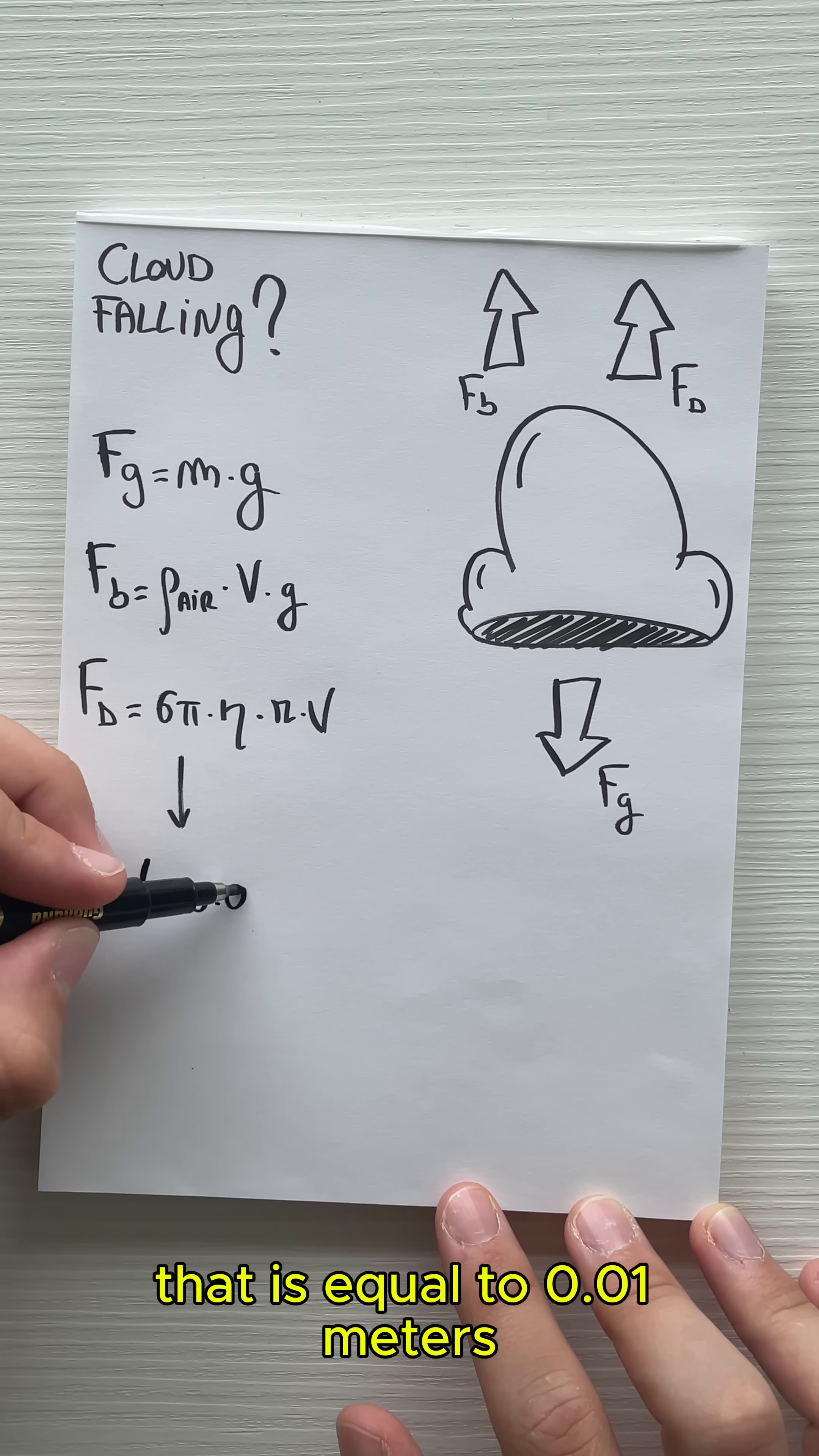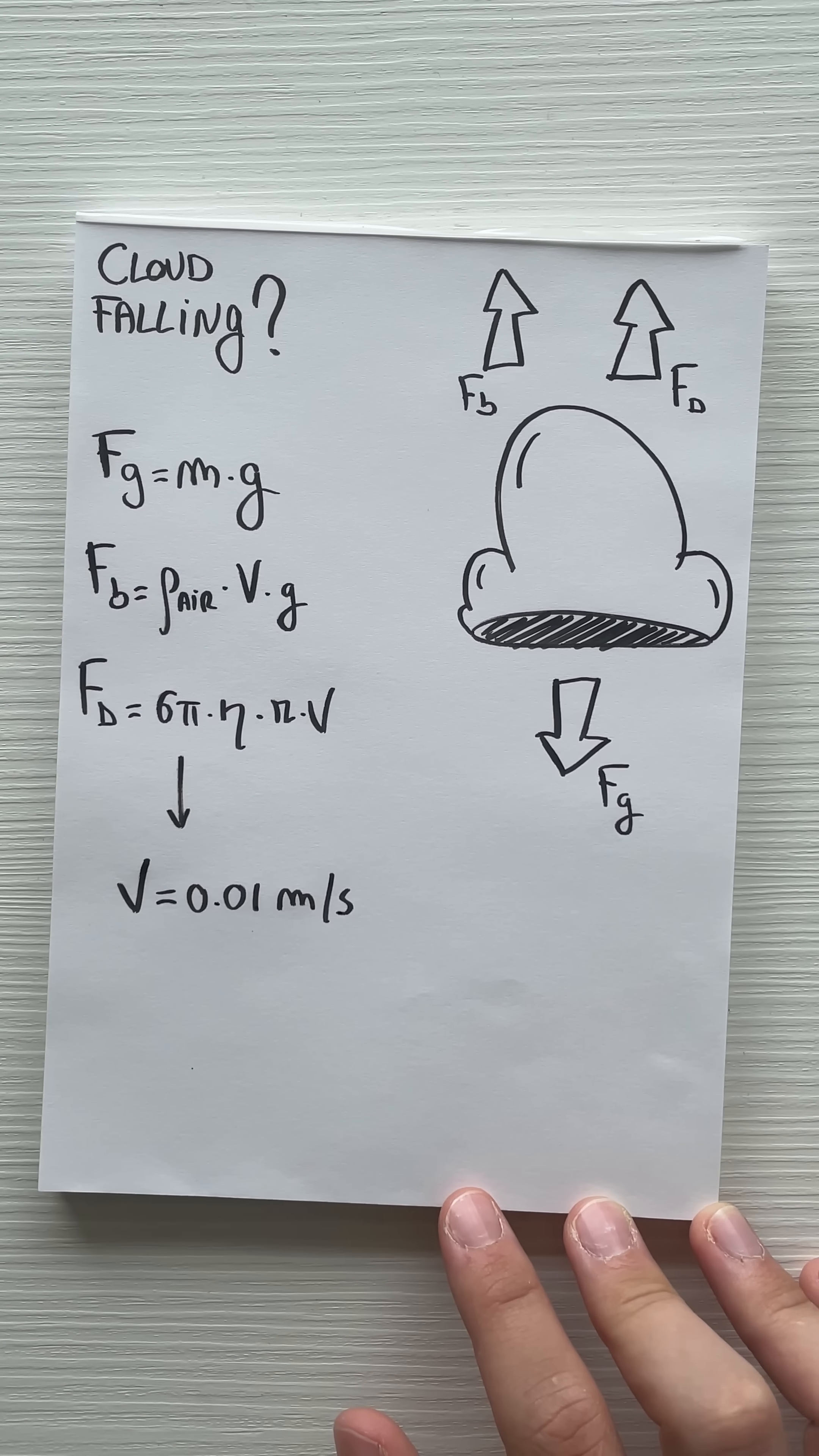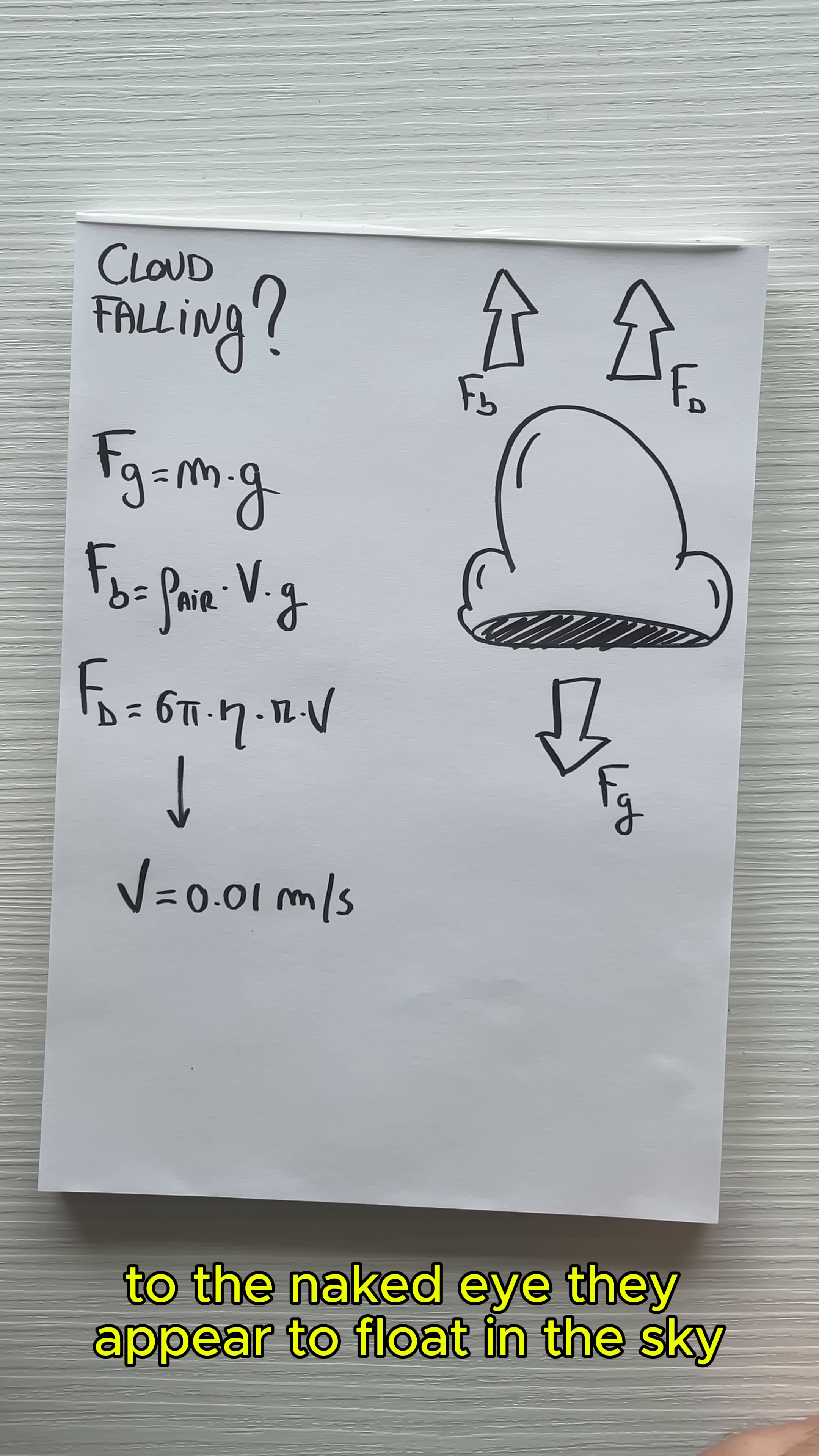That means that the cloud is actually falling, but the motion of the cloud is so slow that to the naked eye they appear to float in the sky.